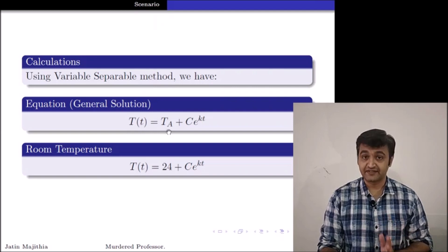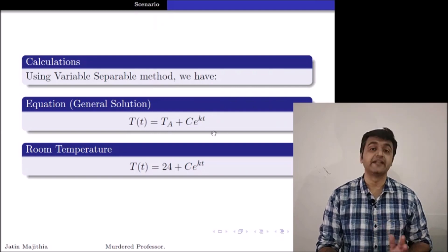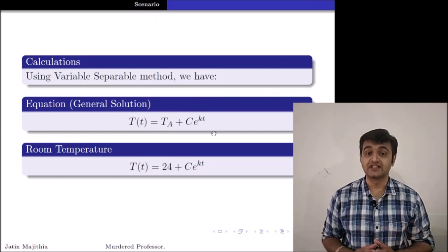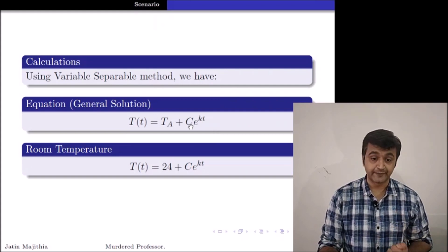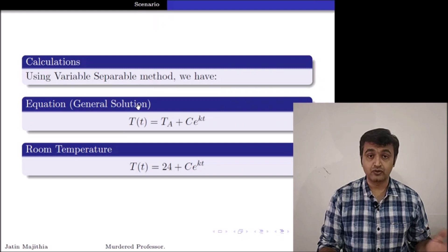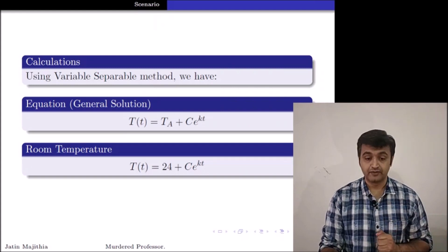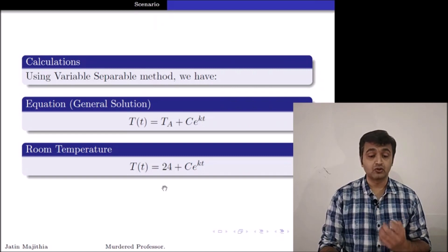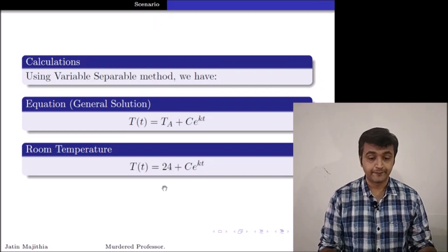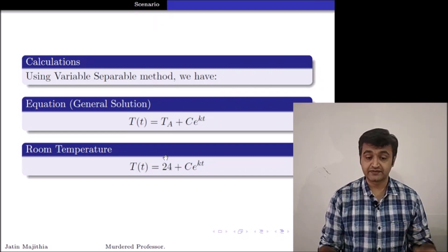That T is nothing but T suffix A plus C into E raised to Kt. Such kind of models are called as exponential models. Why? Because if you see that E, exponential is coming into the picture. So Newton's law of cooling gives us the exponential model. Okay.